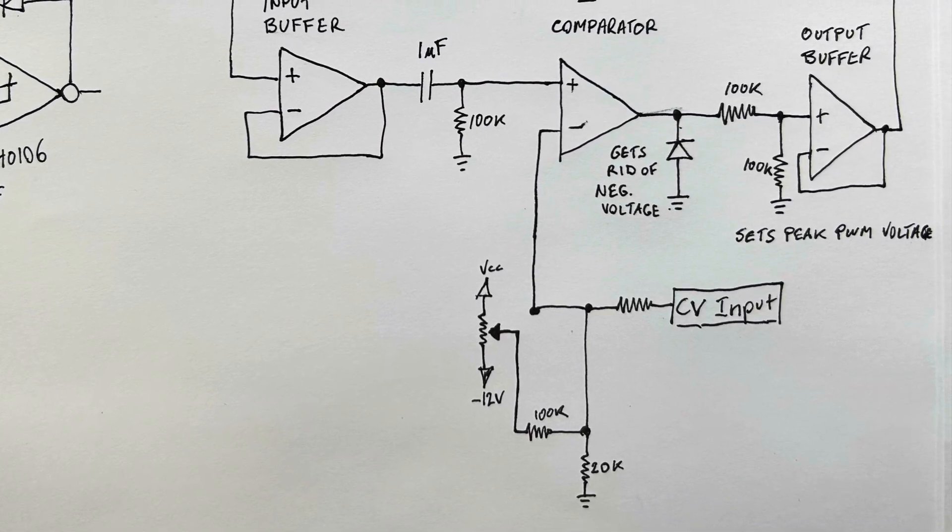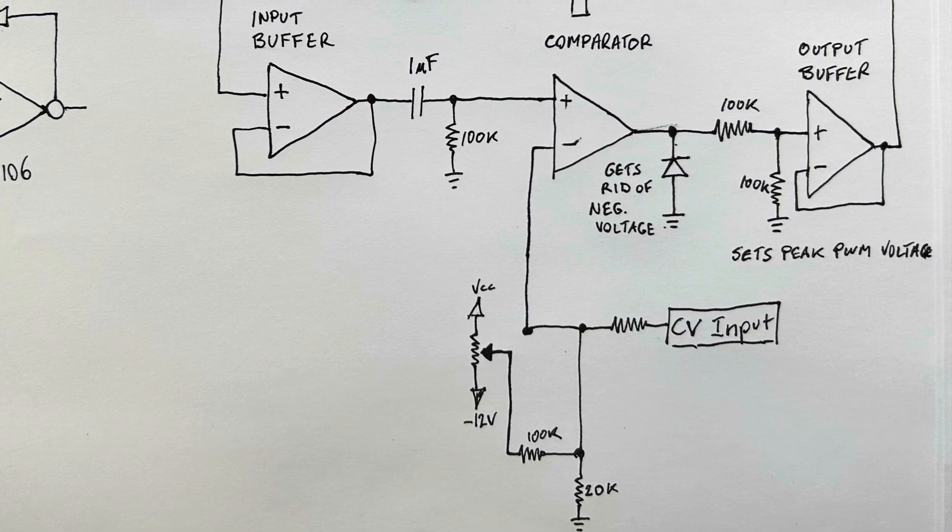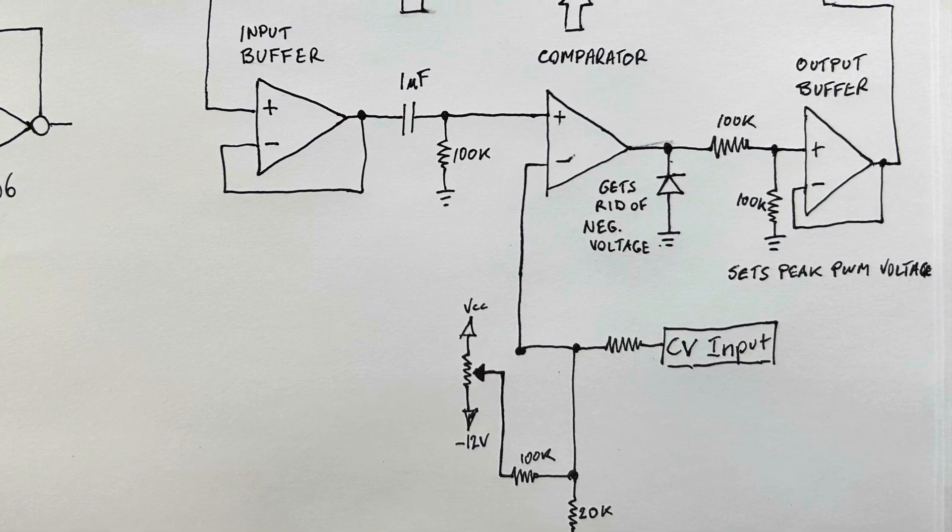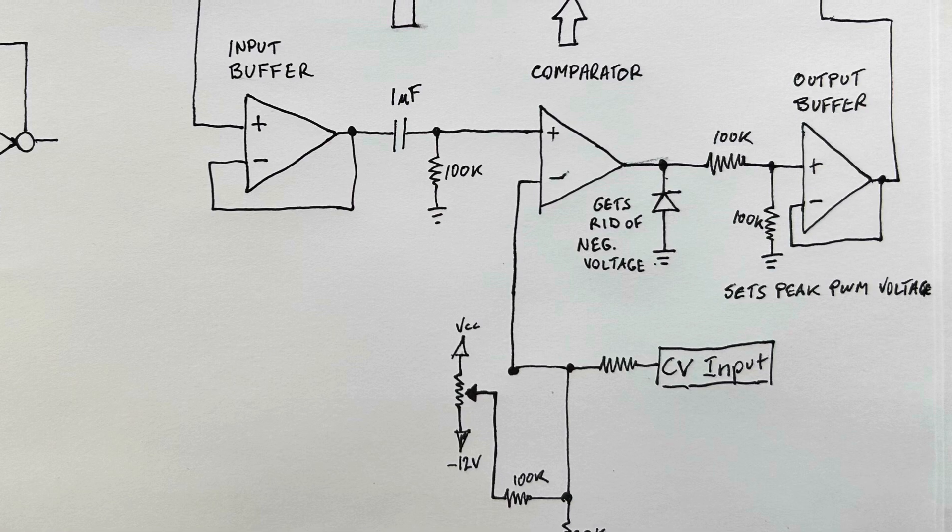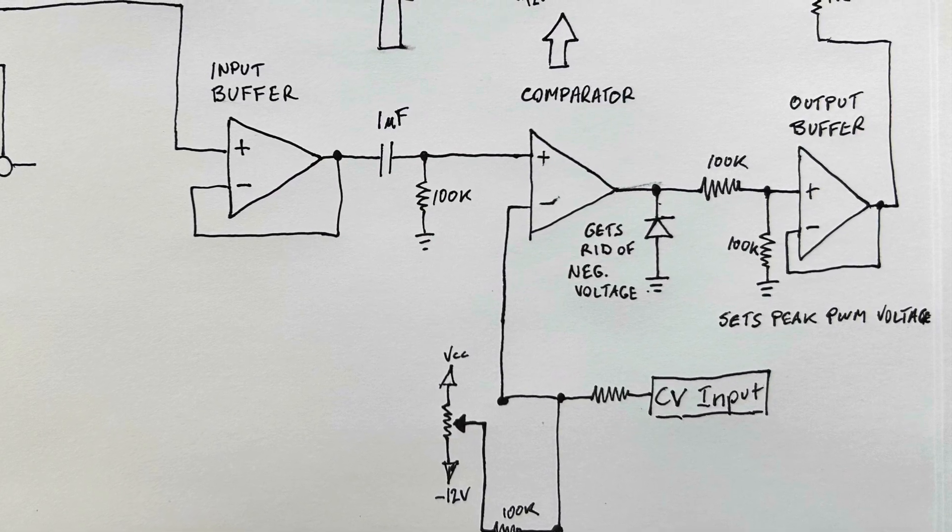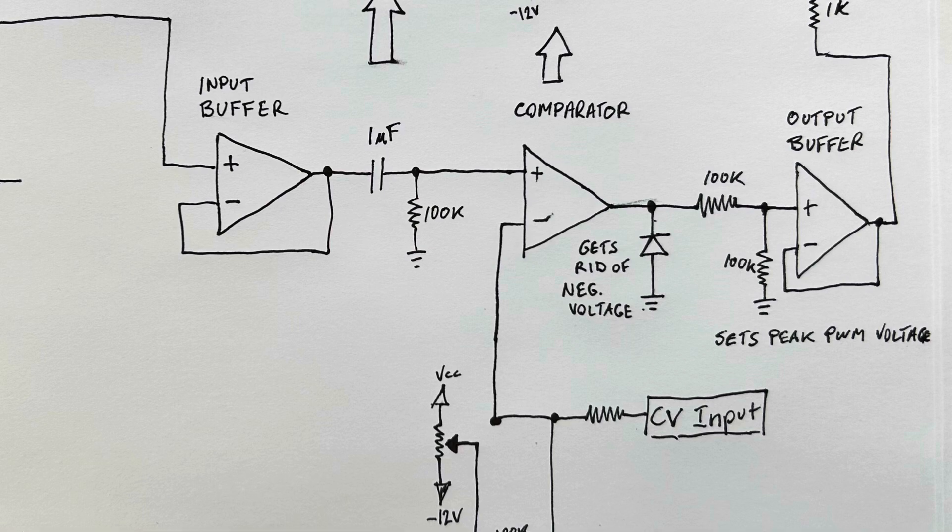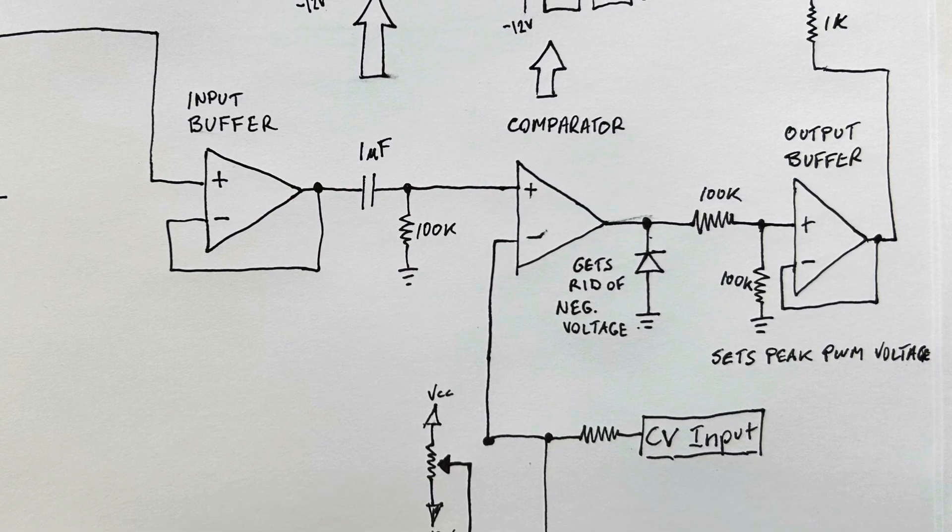Since the output of the comparator is either positive 12 volts or negative 12 volts, for my purposes of using this PWM signal for a motor, I want to get rid of the negative voltage, which I do with a diode from ground.